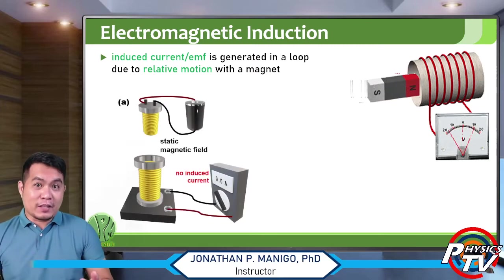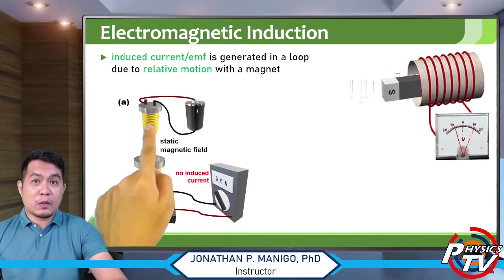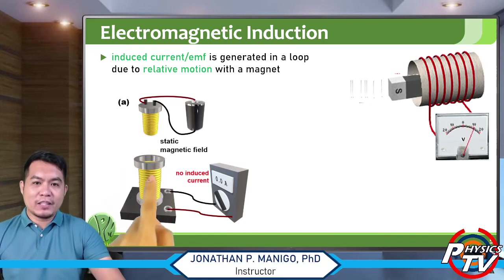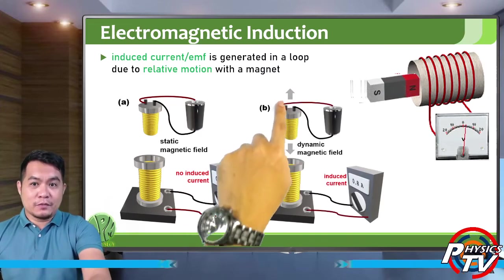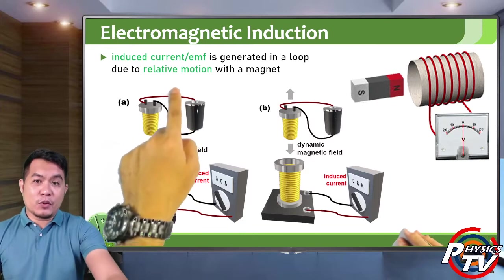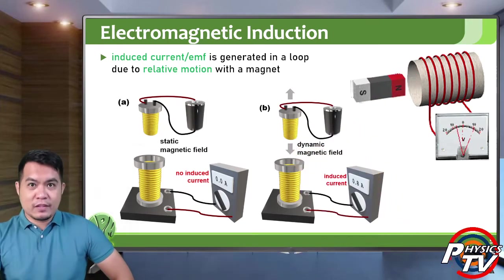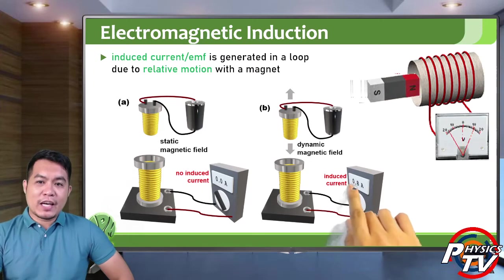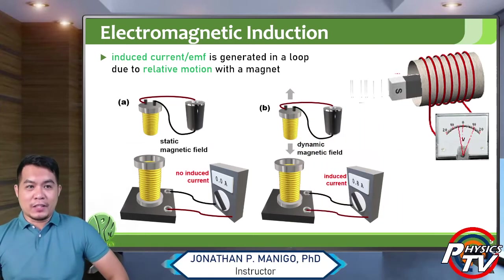The same thing happens when you have an electromagnet — a solenoid or a coil connected to a battery — which becomes a magnet. If there is no relative motion between the electromagnet and the coil, there is no induced current. But if you move the electromagnet with respect to the coil, there will be an induced current. And from the keyword 'relative motion,' you can also move the coil with respect to the magnet and you will still get the same effect: electromagnetic induction with induced current when there is relative motion between the two.